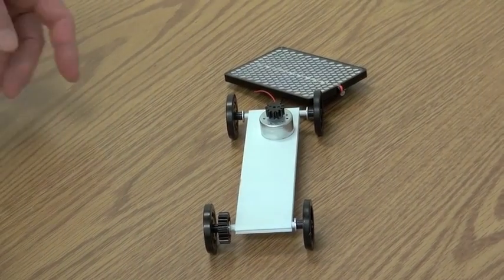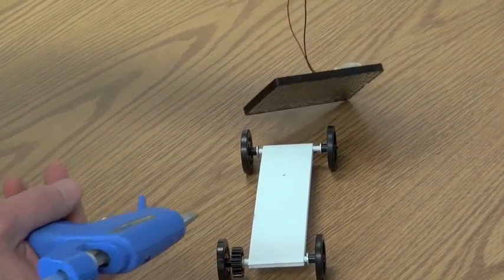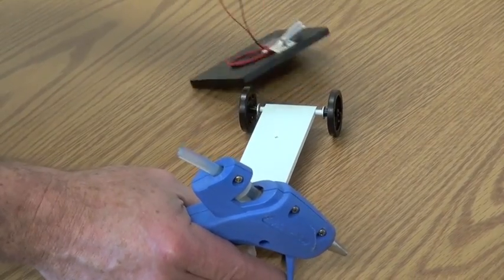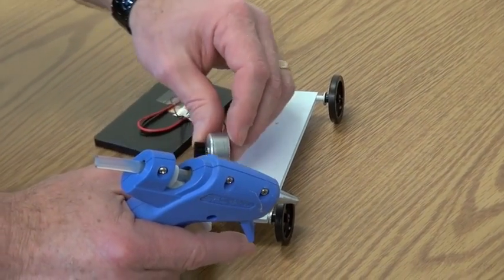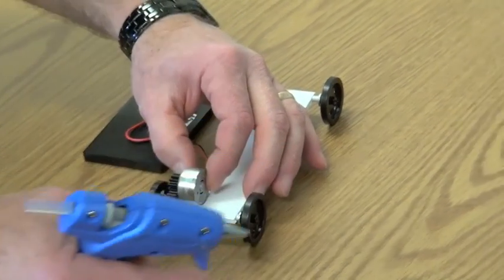As an alternative to taping the motor down, if you have access to a low temp hot glue gun, again making sure that the gear is on the left, put the gear where you need it and the motor where you need it.